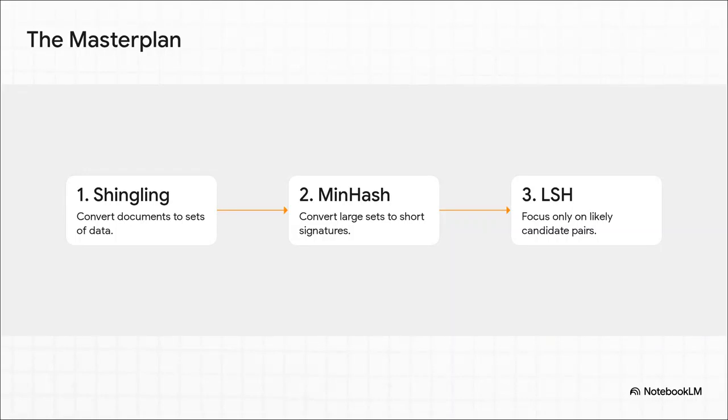So how do we get around this impossible barrier? There's this absolutely brilliant three-step master plan. The whole idea is to be smart and avoid comparing everything. First, we're going to convert our stuff, documents, whatever, into structured data. Then we'll create these clever little fingerprints for them. And finally, we use a technique called locality-sensitive hashing to intelligently group the likely matches together. Let's break it down.